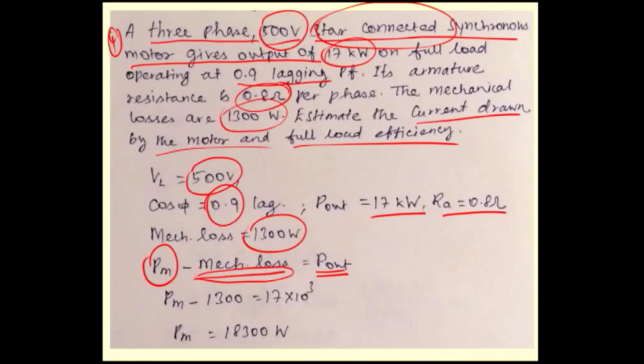Output power is power available on the shaft or shaft power. Shaft power plus mechanical loss is gross mechanical power developed. So gross mechanical power developed minus mechanical loss equals output power.